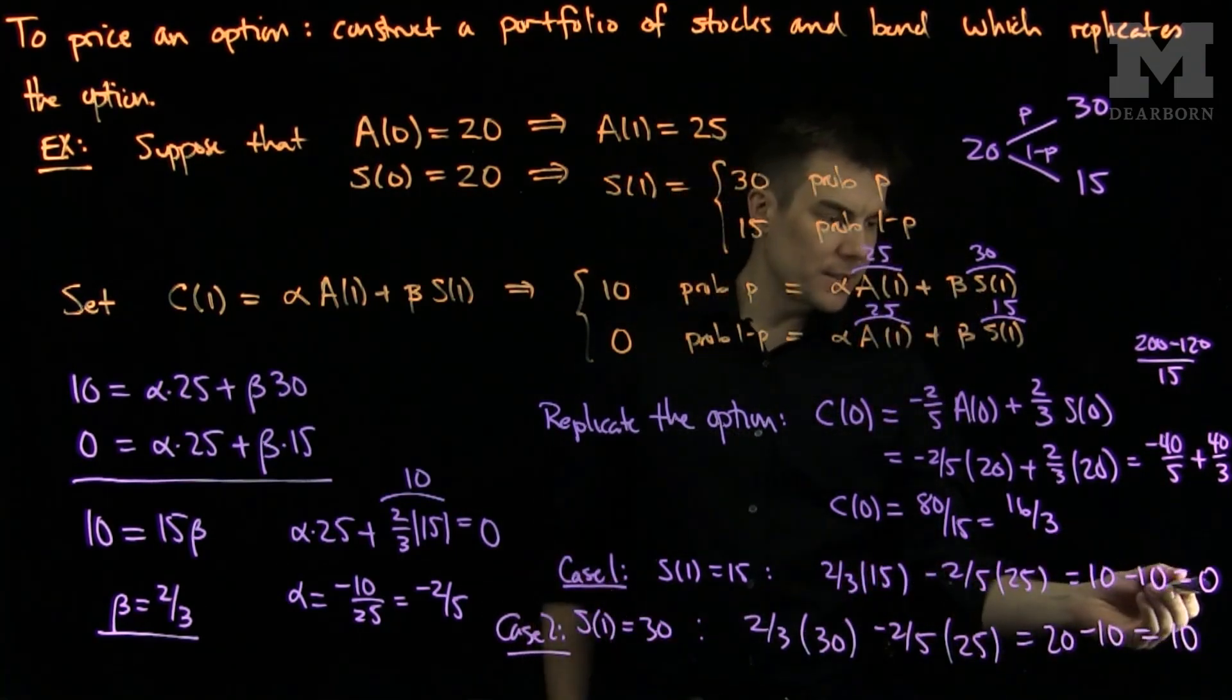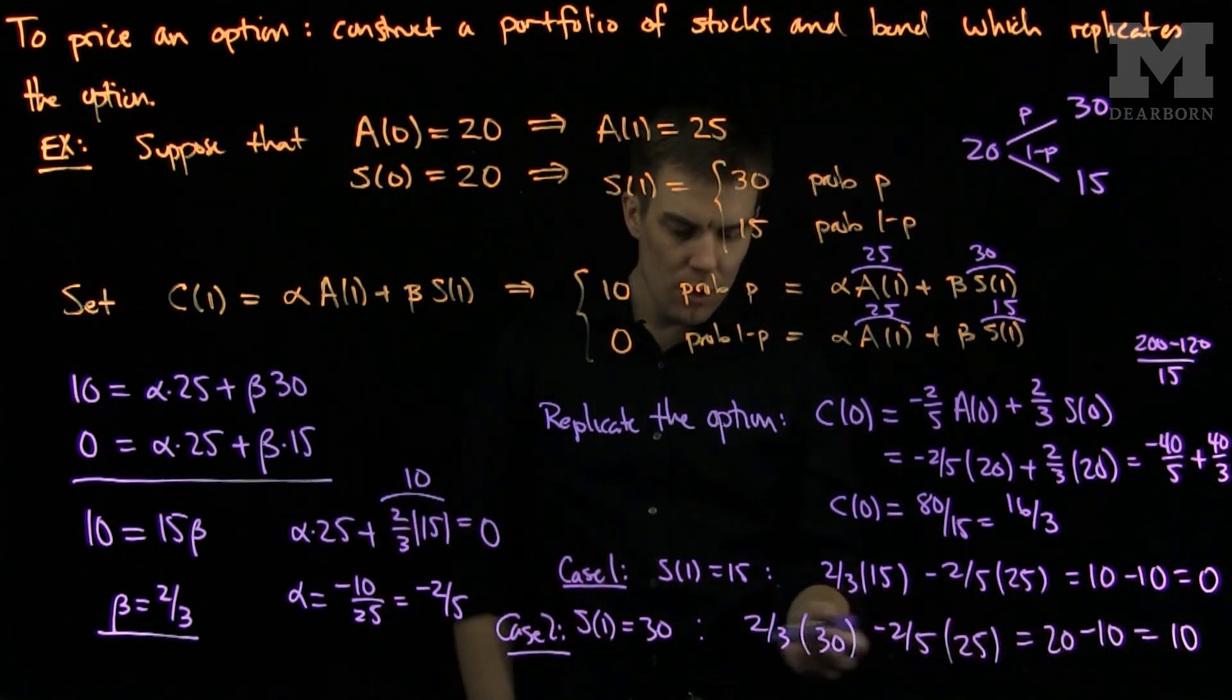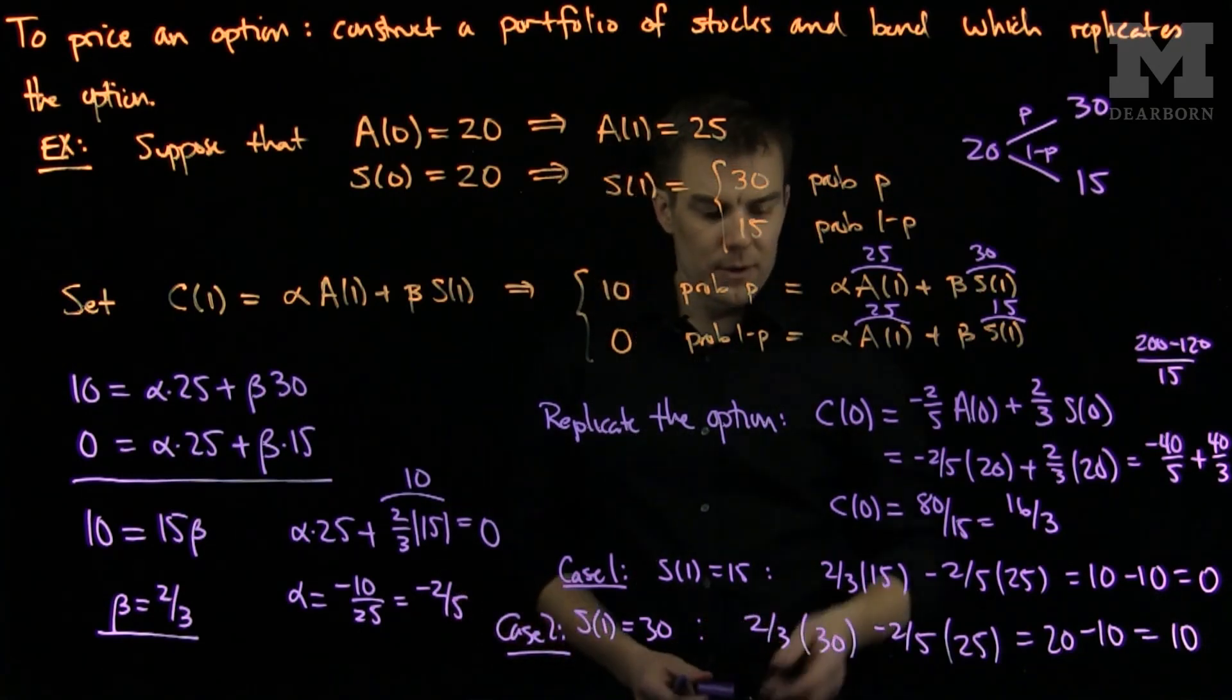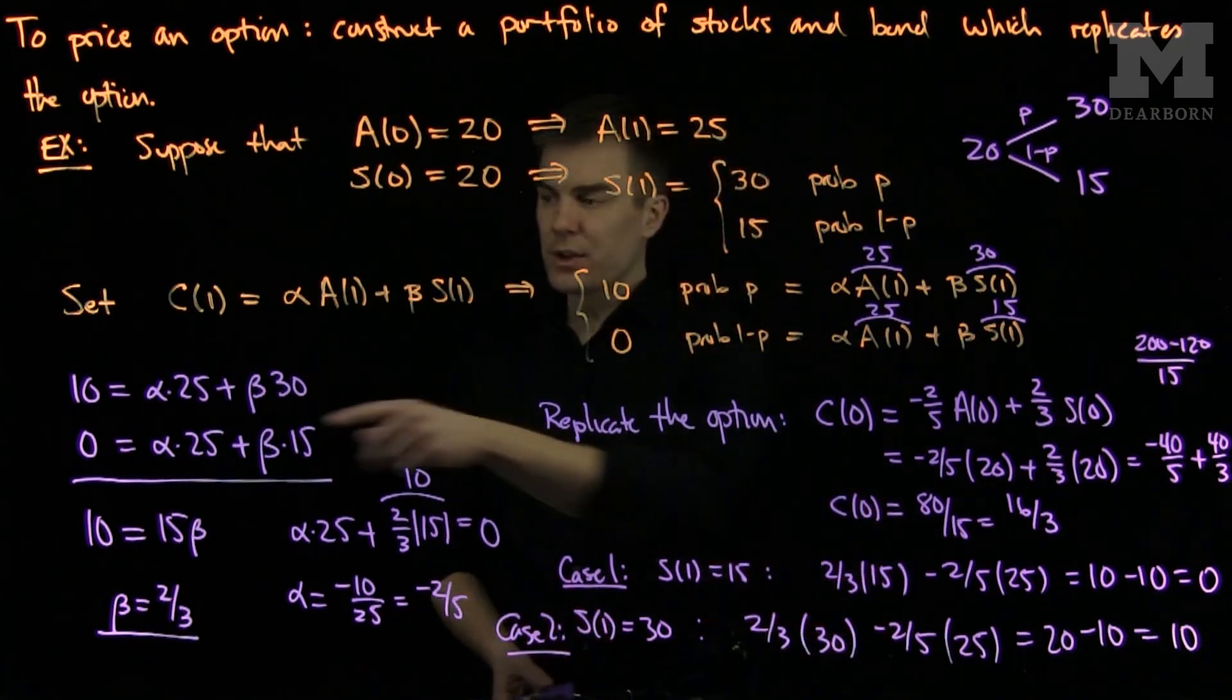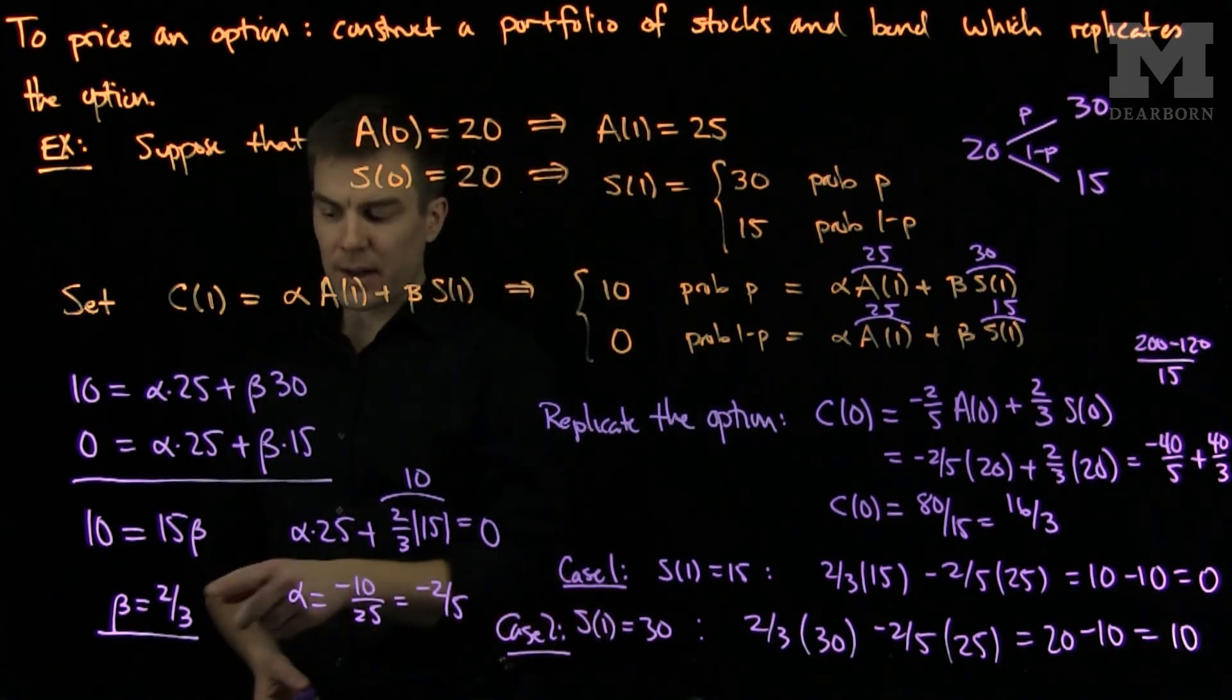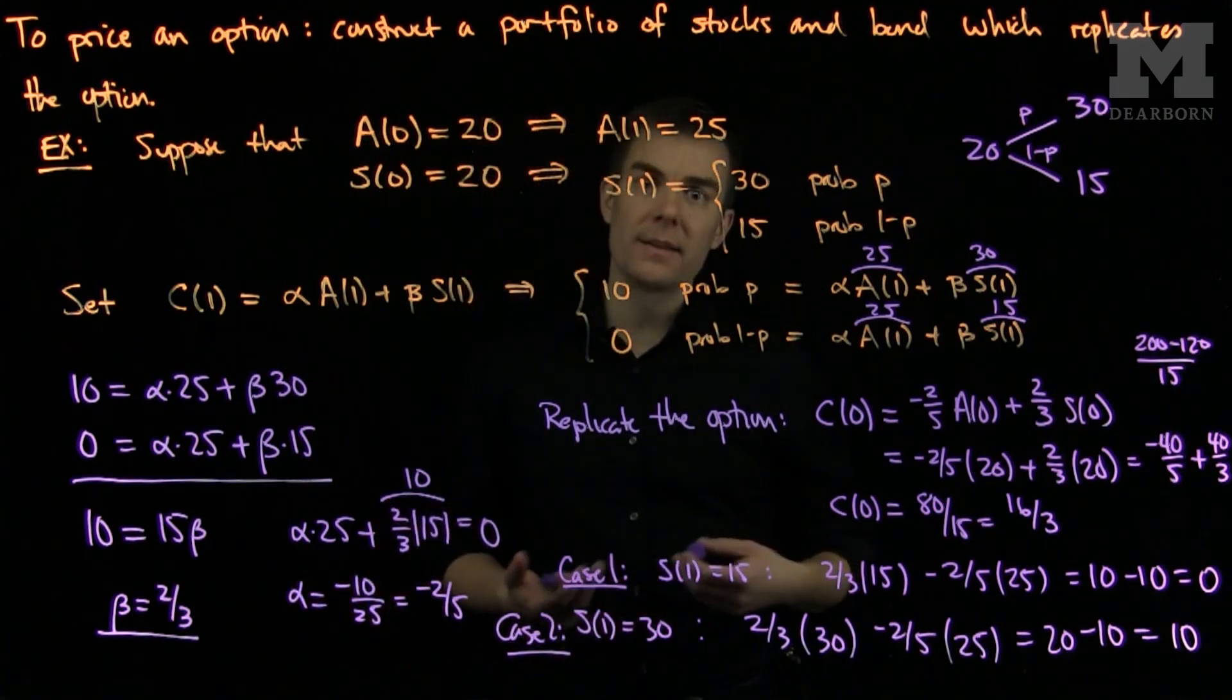So in either case, I will get 0 with this initial portfolio in the case when S(1) is 15. Or I will get 10 with this initial portfolio if the stock price goes up to 30. So with this choice of portfolio, if I borrow negative 2/5 of a bond and I buy 2/3 of a stock, that portfolio will replicate the option.